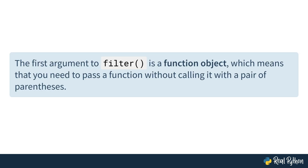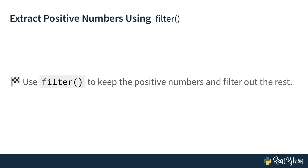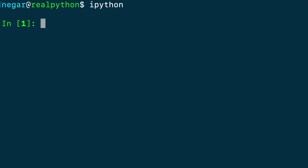Before we get into using filter in action, let's pay attention to something. The first argument of filter is a function object, which means that you need to pass a function without calling it — without a pair of parentheses. Let's extract positive numbers using filter, solving the same problem from before but with filter instead of if statements and for loops. Your goal is to use filter to keep the positive numbers and filter out the rest. The input is the same: a list of numbers from negative two to two — numbers equals [-2, -1, 0, 1, 2].